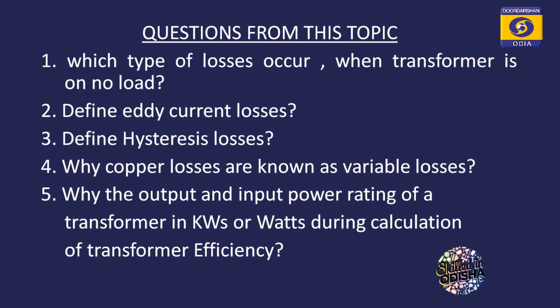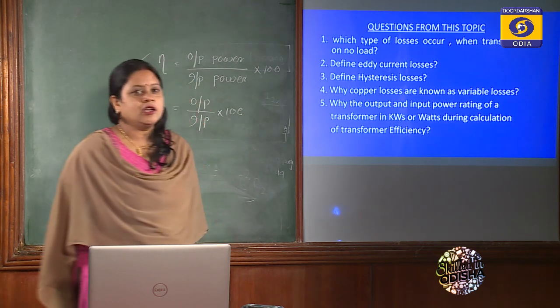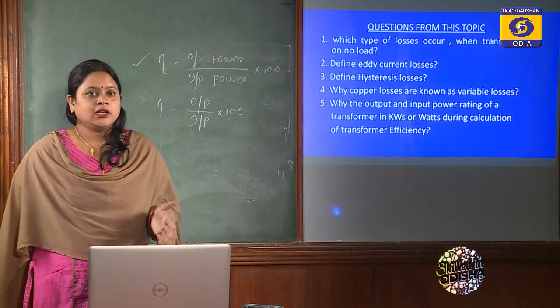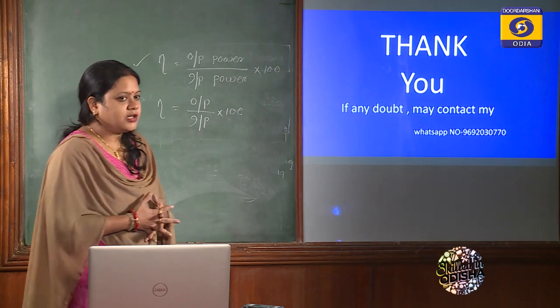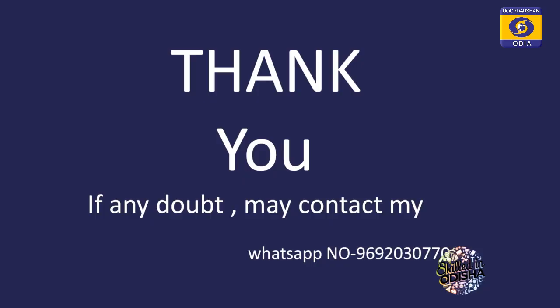Questions from these topics: Which type of losses occur when the transformer is on no load? Define eddy current losses. Define hysteresis losses. Why are copper losses known as variable losses? Why are the output and input power ratings of a transformer in kilowatts or watts during efficiency calculation? — Because our losses are also in kilowatts or watts. Thank you. If any doubt, you may contact me on WhatsApp number 9692030270.